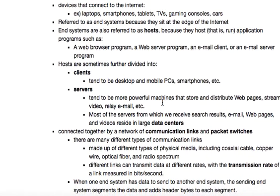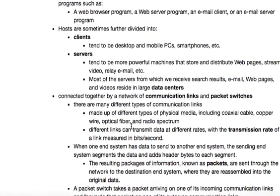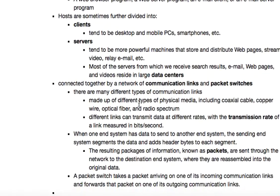Most of the servers from which we get search results and email and things like that reside in large data centers. Places like Google just have thousands of servers in their data centers. All these end systems are connected together by a network of communication links and packet switches. They're made up of different physical things, including coaxial cables, copper wire, optical fiber, and radio spectrum.